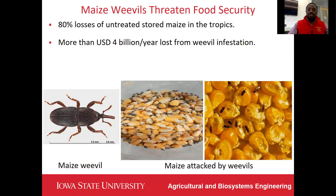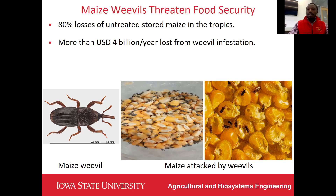Infestation by maize weavers starts from the field and continues in storage. In the first picture, you can see the maize weaver and its mandibles. The female weaver uses these mandibles to make a hole in the kernel, lays an egg there, seals it, and moves on to the next kernel. In her lifetime, one female weaver lays up to 200 eggs.